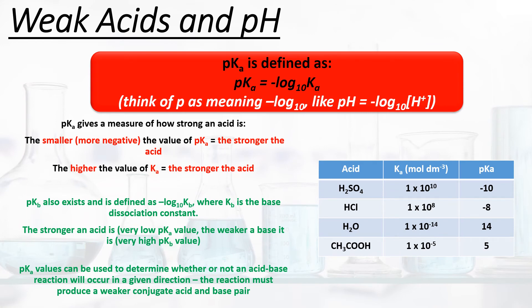We can also define pKa, which is the negative log to the base 10 of Ka. So P means negative log to the base 10: pH is −log[H+], and pKa is −log(Ka). pKa gives a measure of how strong an acid is. The smaller or more negative the value of pKa, the stronger the acid. Similarly, the higher the value of Ka, the stronger the acid. Ka is normally written for weak acids.